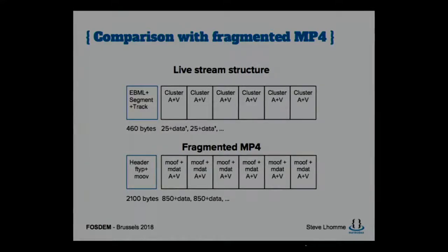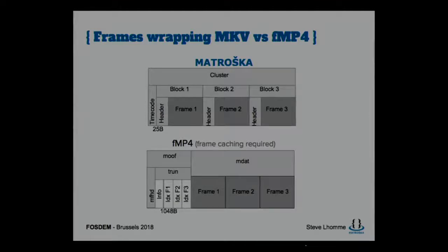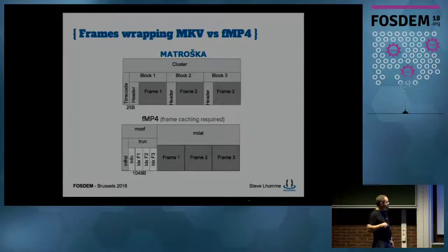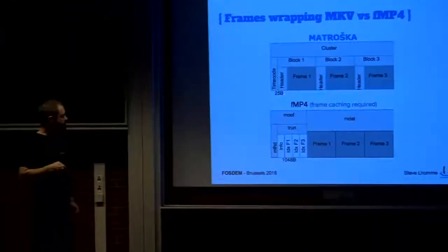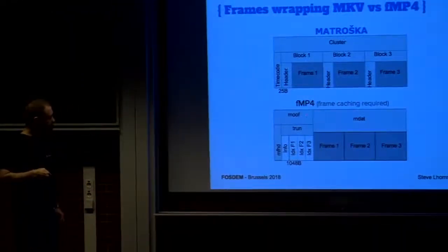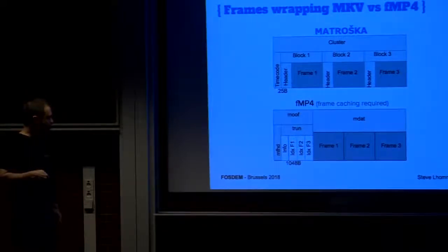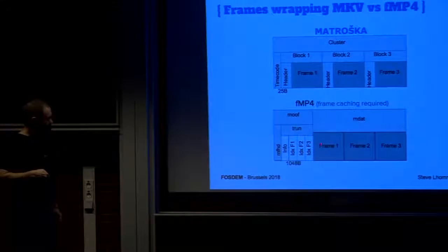You can already see Matroska saving space. In more detail: in each cluster, there is one timecode for the cluster, and for each block you have a frame and a header giving its timestamp and other information. So before you get the first frame in a cluster, you have 25 bytes of overhead. For fragmented MP4, the structure is more complex — you have an atom consisting of sub-atoms totaling about 1 KB, then the actual frame data.